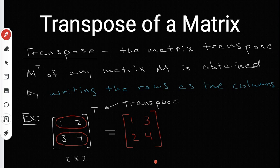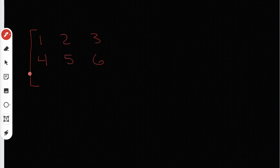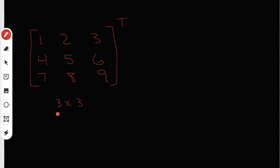So the transpose of the matrix [1, 2; 3, 4] is simply [1, 3; 2, 4]. Let's do another example. Let's say we want to find the transpose of a three by three. Let's say we've got 1, 2, 3, 4, 5, 6, and 7, 8, 9. This is a three by three because it has three rows and three columns. We always put the row number first and the column number second. When we take the transpose of this three by three, we're also going to get a three by three in the end.